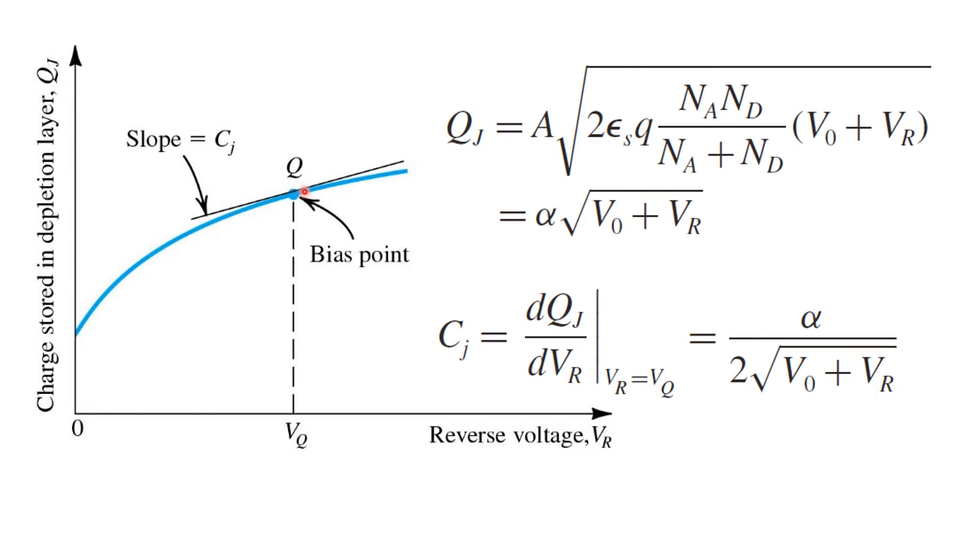An expression for that derivative can be found by differentiating our expression for Qj with respect to Vr. And what we find is that the effective capacitance of the P-N junction is inversely related to the square root of the voltage across it. So that for higher reverse bias voltages, the capacitance appears to be less.